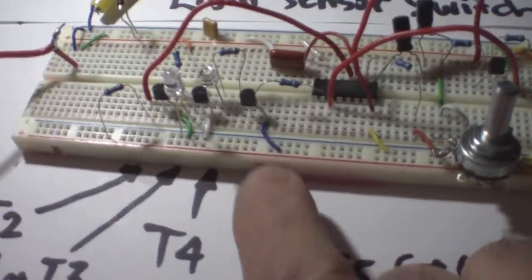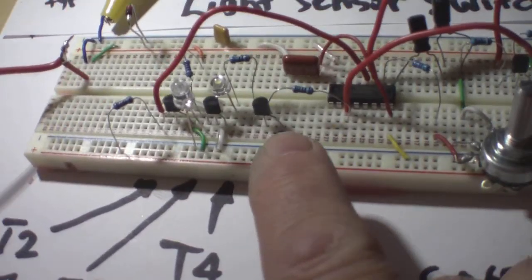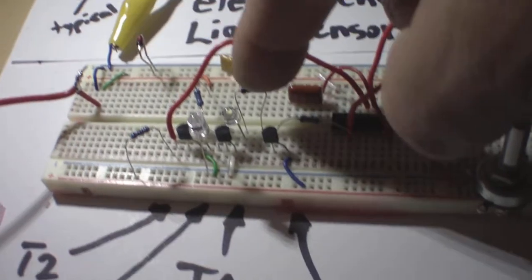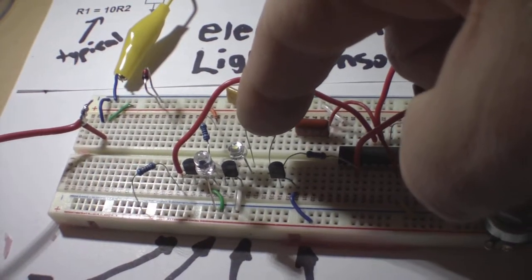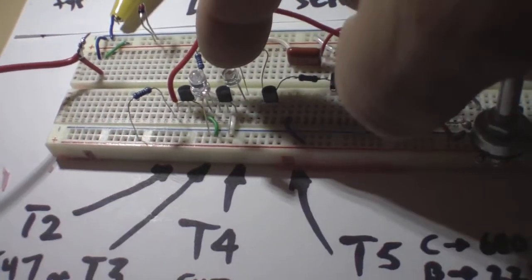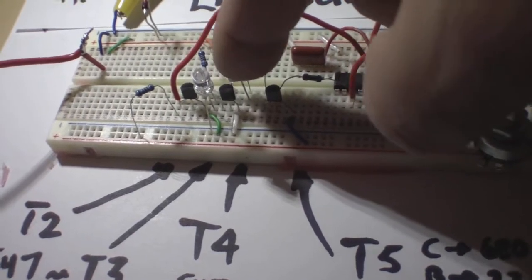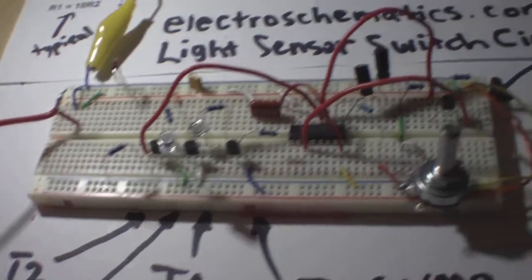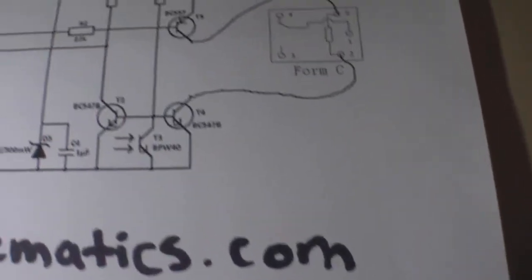The collector on T5 sends its output through this 680 ohm resistor into this LED. And then that passes, you can see...